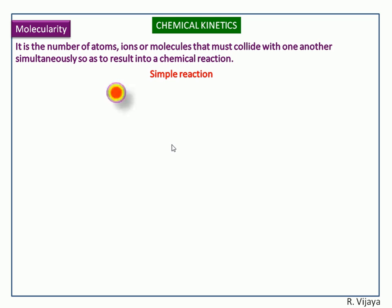Let us consider one molecule is converted into product. Here we calculate the molecularity. Here the number of molecules is 1, so the molecularity is 1. Next we calculate the molecularity for this reaction. Here we have two molecules, so the molecularity is 2. Next we see another reaction. Here the number of molecules in the reactant are 3, so the molecularity is 3.